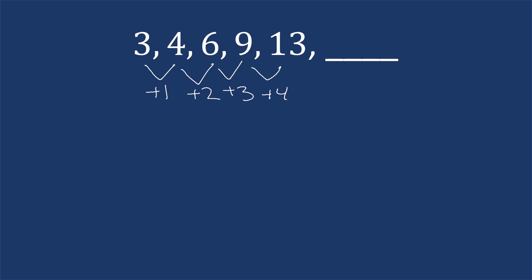So what is the pattern of these numbers changing? We're adding one, then adding two, then adding three, then adding four. Then we assume the next one would be to add five — so the amount we're adding is increasing each time. So thirteen plus five is eighteen.